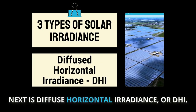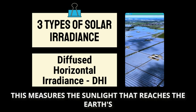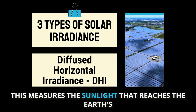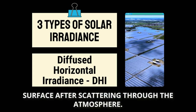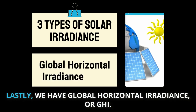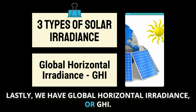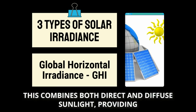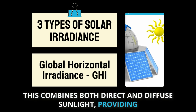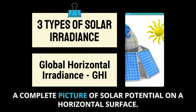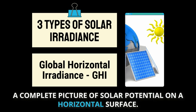Next is Diffuse Horizontal Irradiance, or DHI. This measures the sunlight that reaches the Earth's surface after scattering through the atmosphere. Lastly, we have Global Horizontal Irradiance, or GHI. This combines both direct and diffuse sunlight, providing a complete picture of solar potential on a horizontal surface.